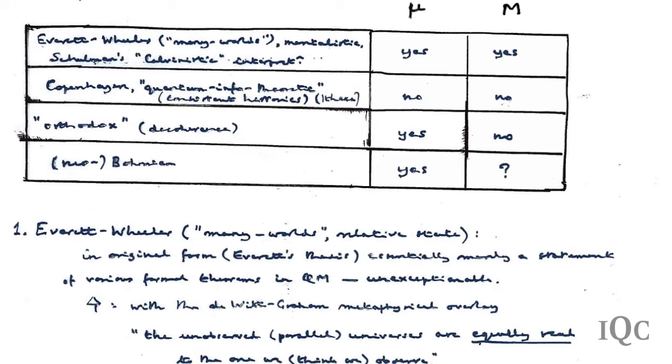All three share the idea that at all levels below our own direct consciousness, the quantum formalism really is saying something about the real state of the world.